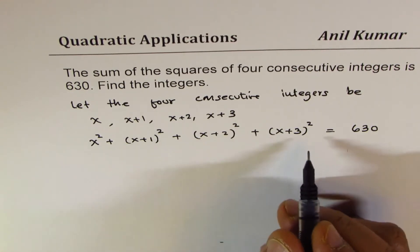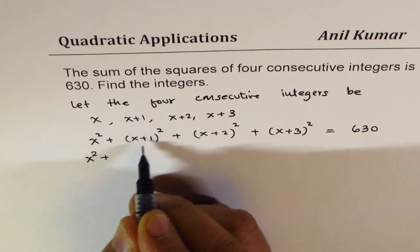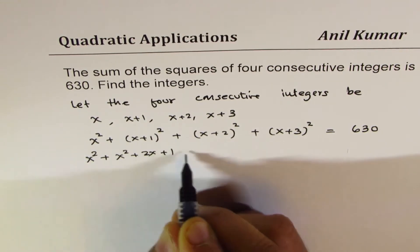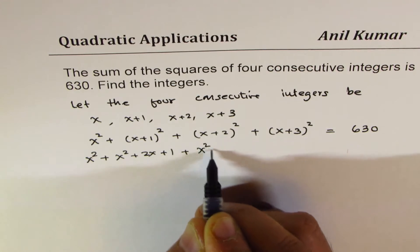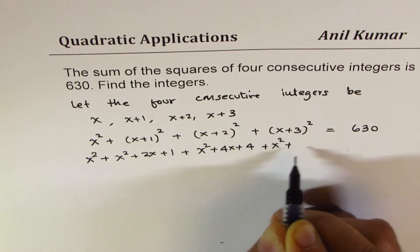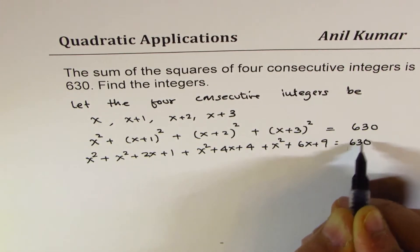So we can expand and simplify. So we get x square plus when you expand this you get x square plus 2x plus 1. Here you get x square plus 4x plus 4, and then x square plus 6x plus 9 equals to 630.